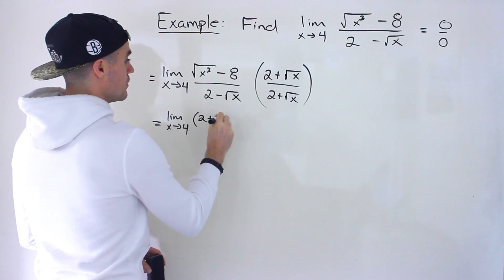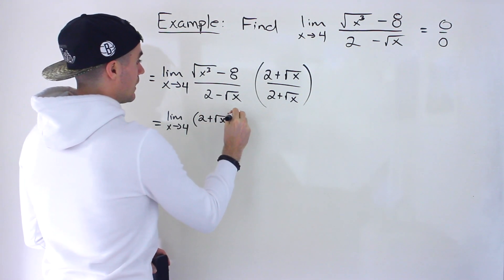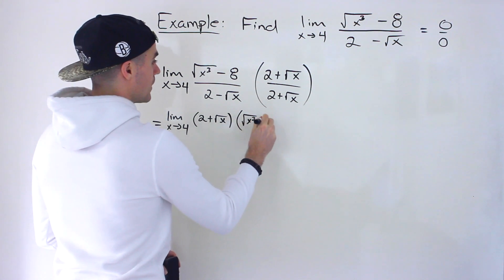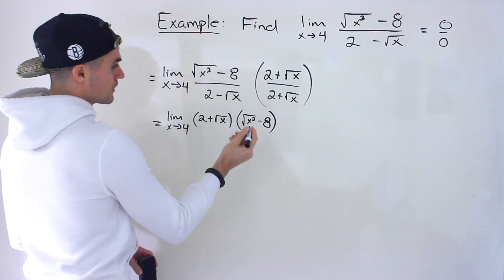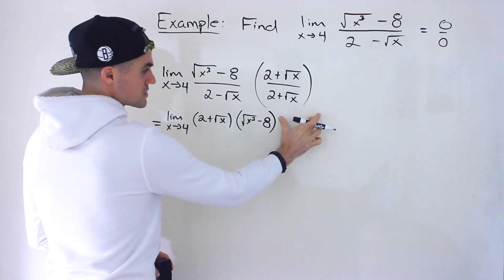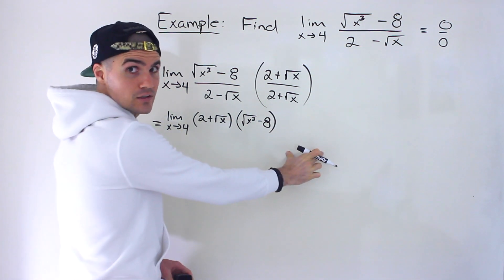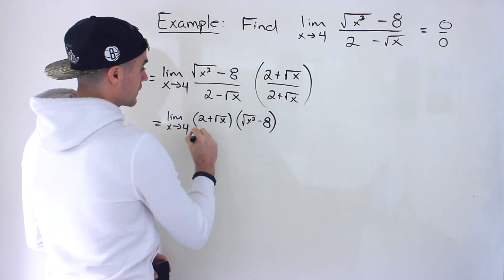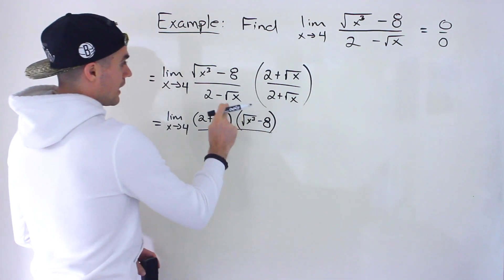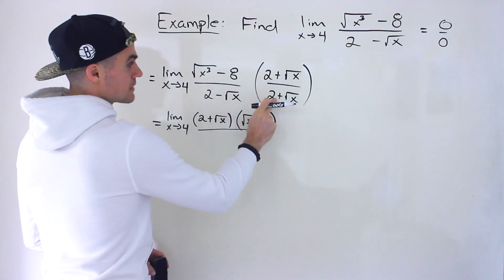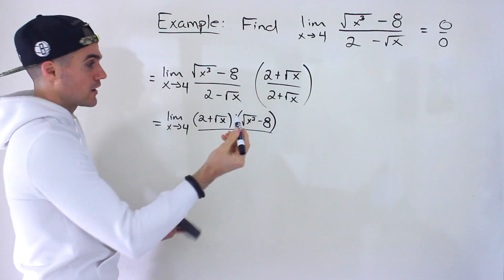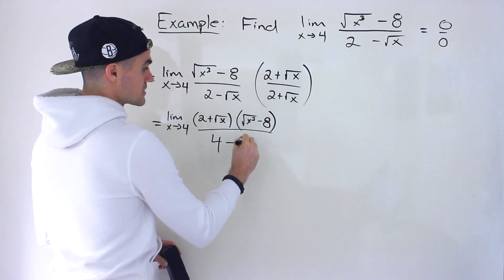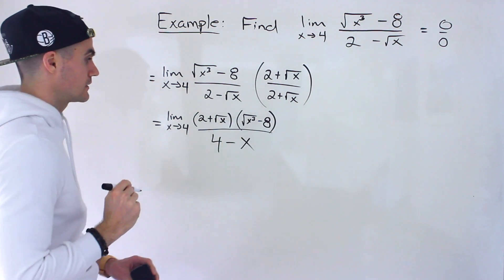We'll have the limit as x approaches 4. I'm going to put the (2 plus root x) factor in front, and then the square root of x to the power of 3 minus 8 — the order doesn't matter, it's just because we'll rationalize that next. In the denominator, 2 minus root x times 2 plus root x is a difference of squares: 2 times 2 is 4, minus root x times root x is just x.